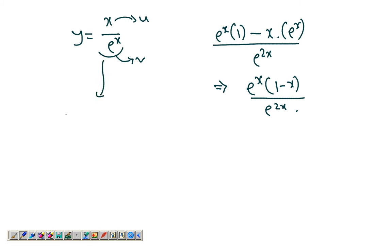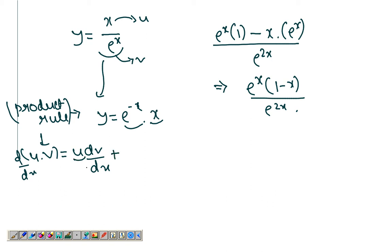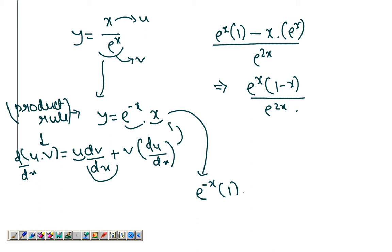Another way of doing this without using the quotient rule — you can also apply the product rule. If you're not very comfortable with the quotient rule, you can write x over e to the x as e to the power negative x times x. Now simply apply the product rule: d by dx of u times v is the first function as it is times the derivative of the second, plus the second as it is times the derivative of the first. Applying this gives you e to the negative x times 1, plus x times negative e to the power negative x. Simplifying, we get 1 over e to the x minus x over e to the x.